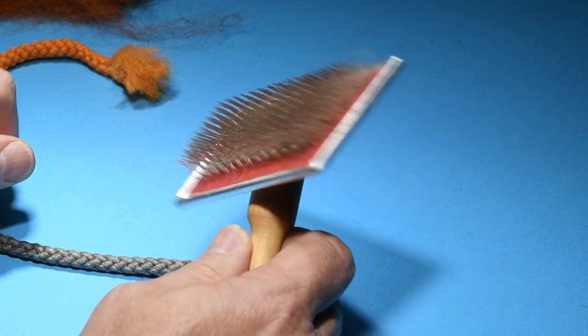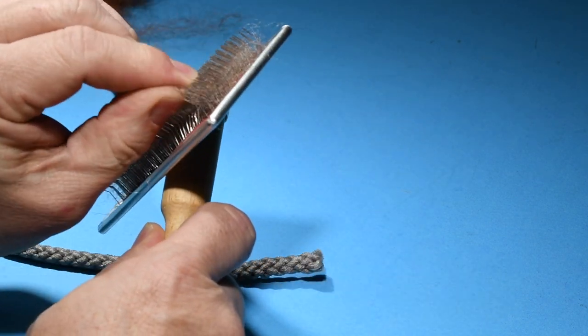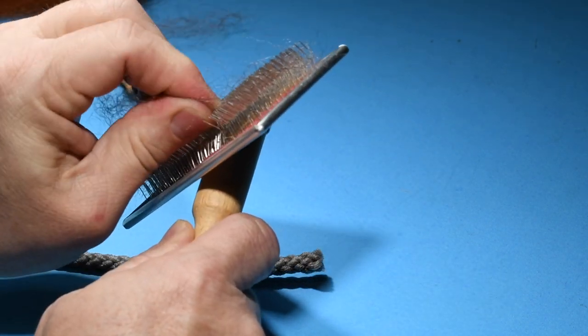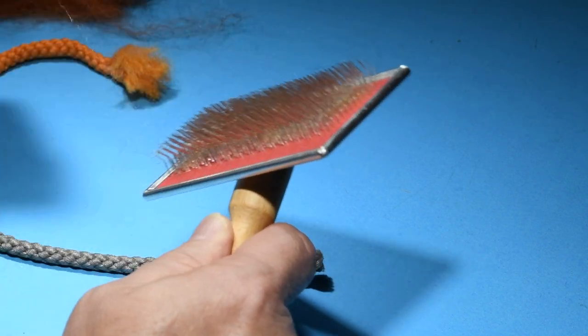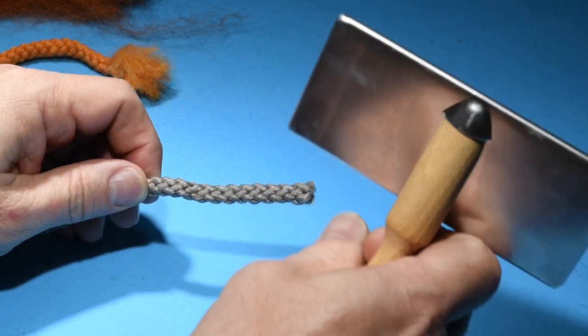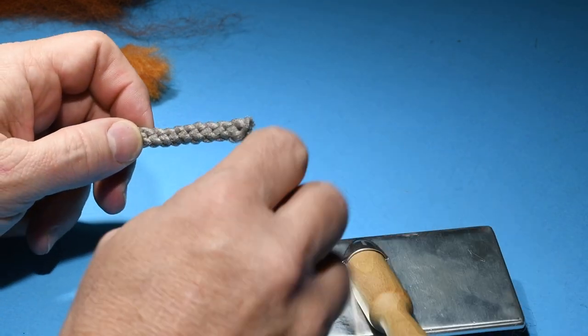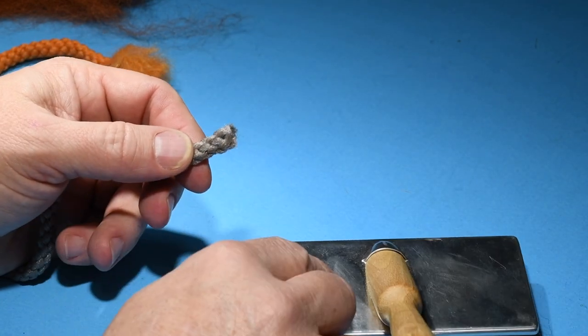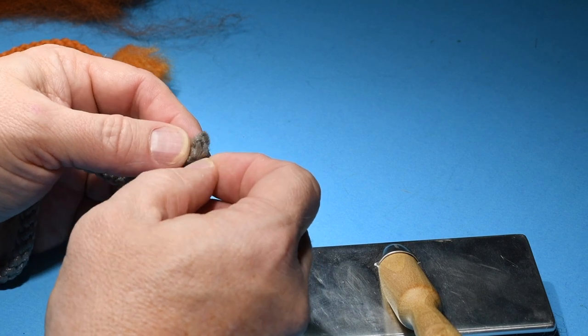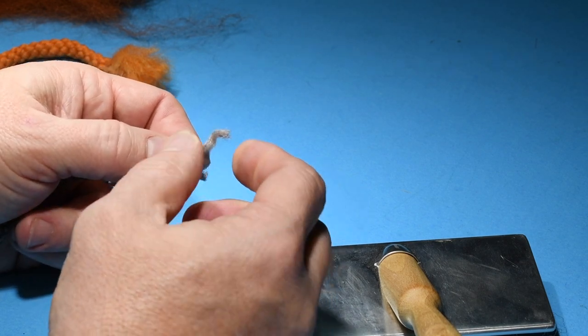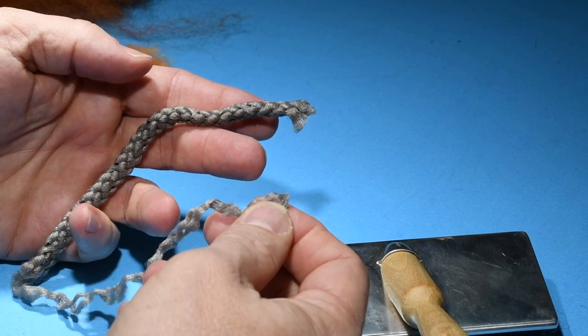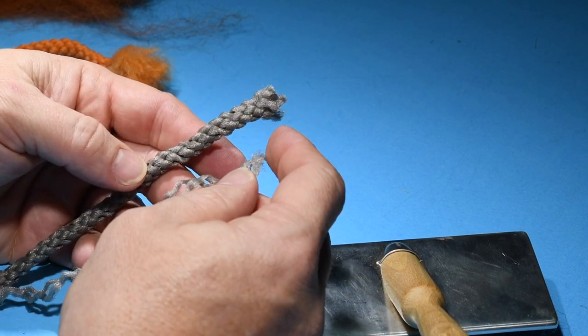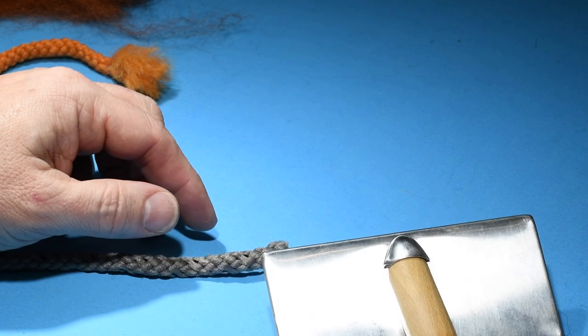A wire dog brush works great for doing this. You can see this brush has been well used. I'll start toward one end here, and I'll tell you a little trick that I figured out over time. Before I start brushing, I want to pull just one of those strands out. What that does is it loosens the weave up a little bit so it's easier to brush out.